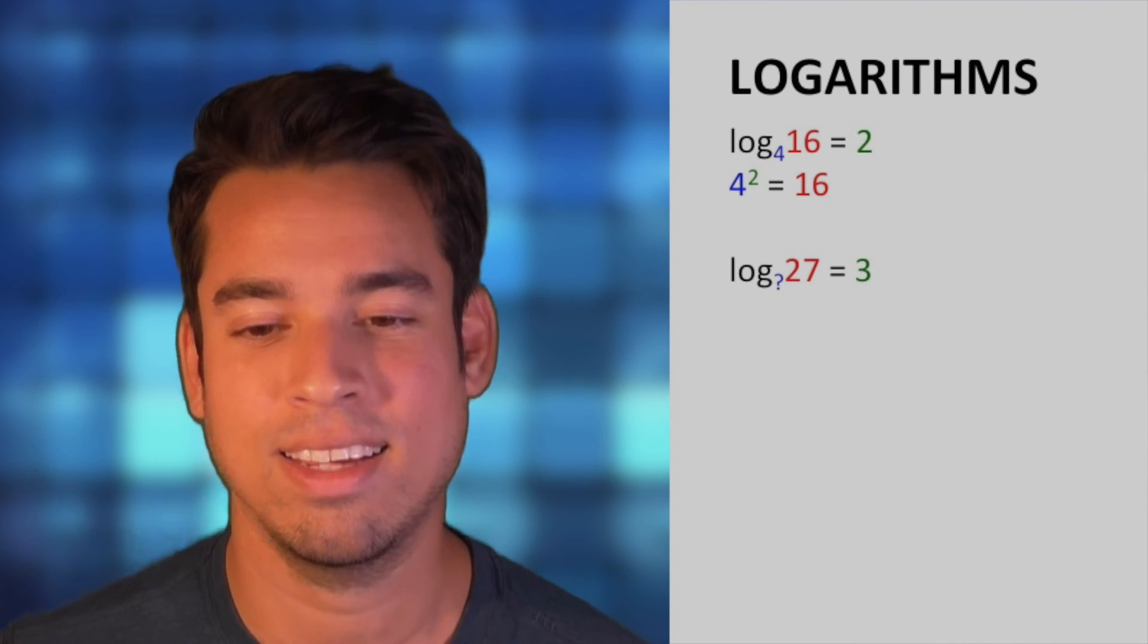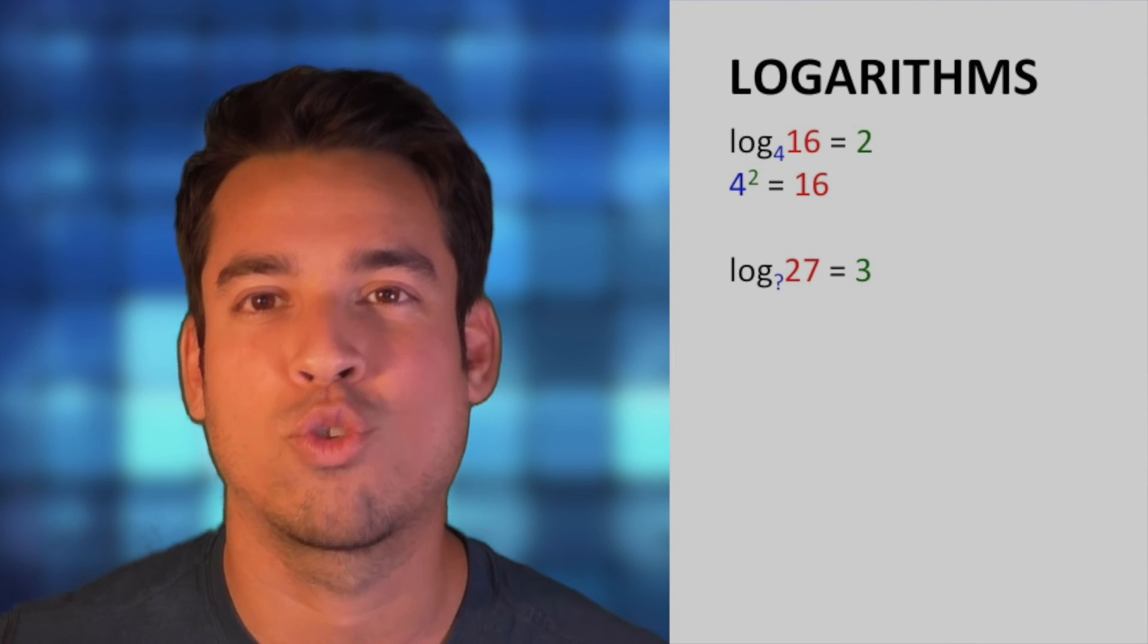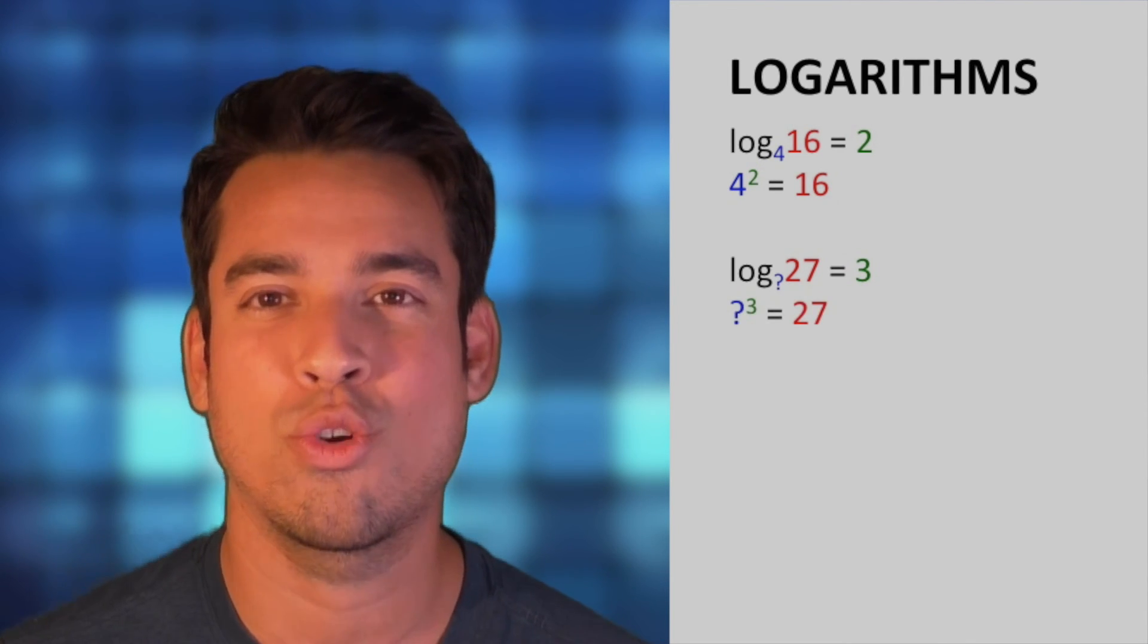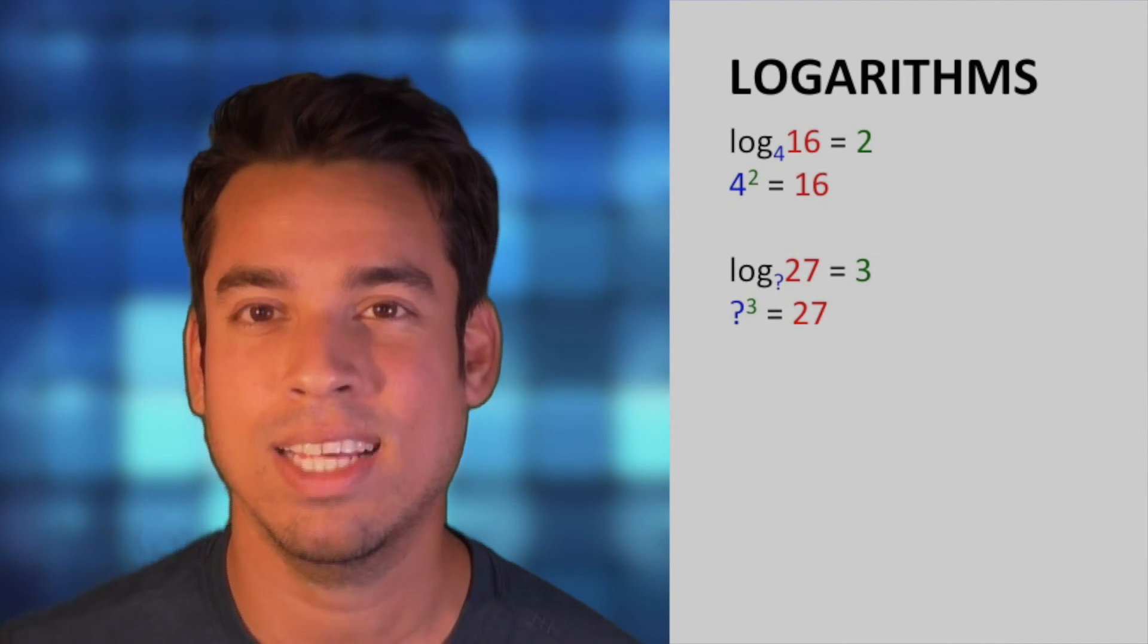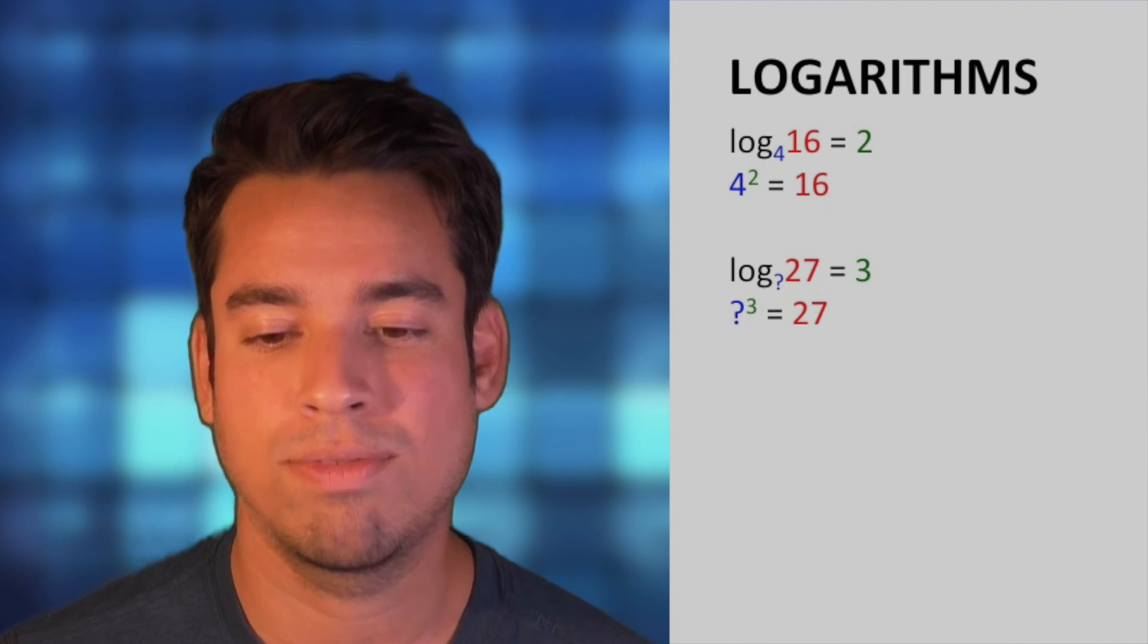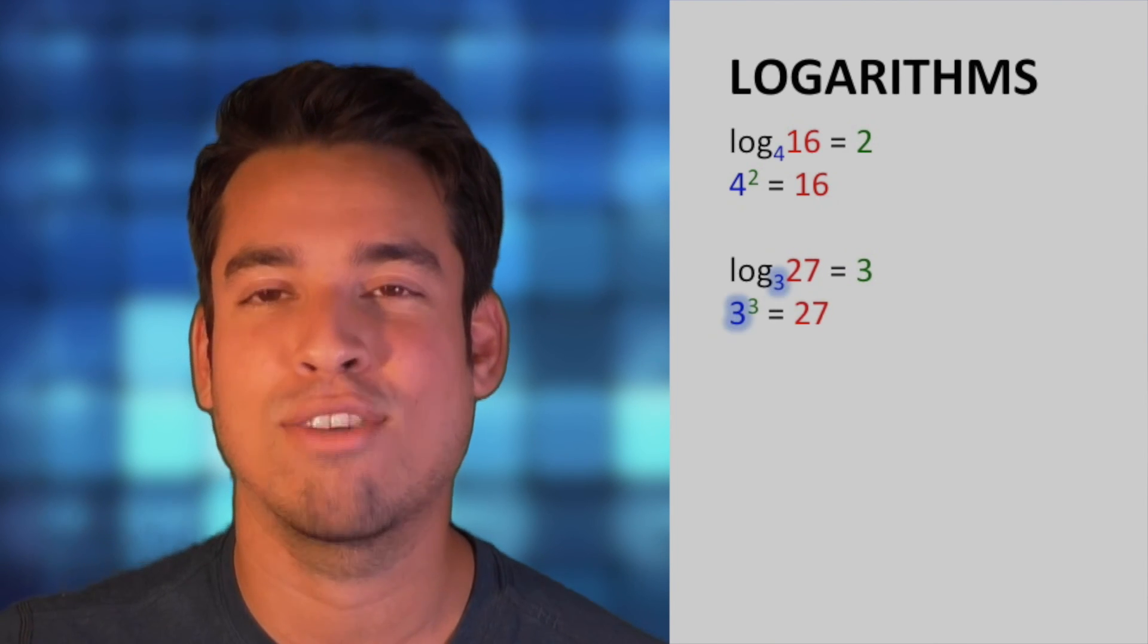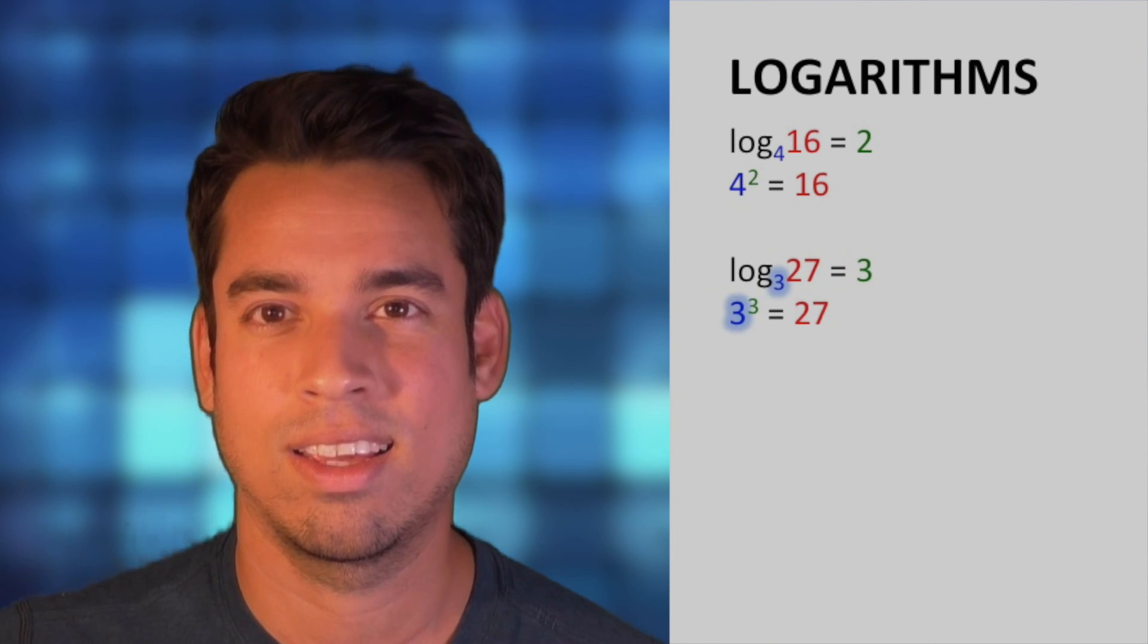Now let's look at log base something of 27 equals 3, meaning something to the third power equals 27. How do we figure that out? Well, what to the third power is 27? That of course is 3. That's all there is for information on logarithmic functions. Let's get on to some practice problems.